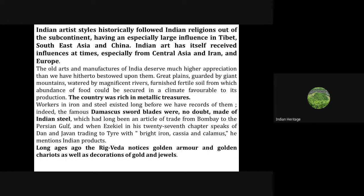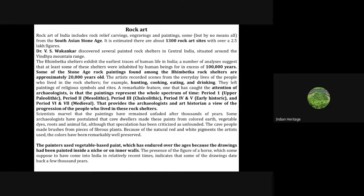The country was rich in metallic treasures. Damascus sword blades were no doubt made of Indian steel. Long ages ago the Rigveda mentioned golden armor, golden chariots, and decorations of gold and jewels.